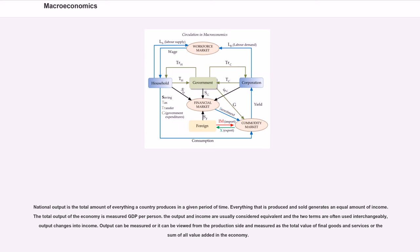National output is the total amount of everything a country produces in a given period of time. Everything that is produced and sold generates an equal amount of income. The total output of the economy is measured GDP per person.